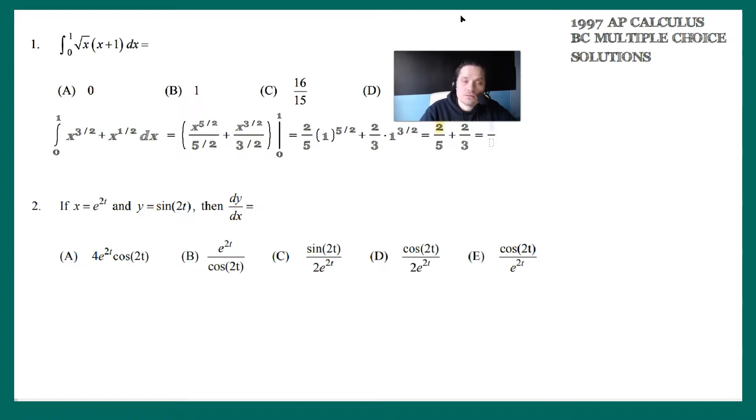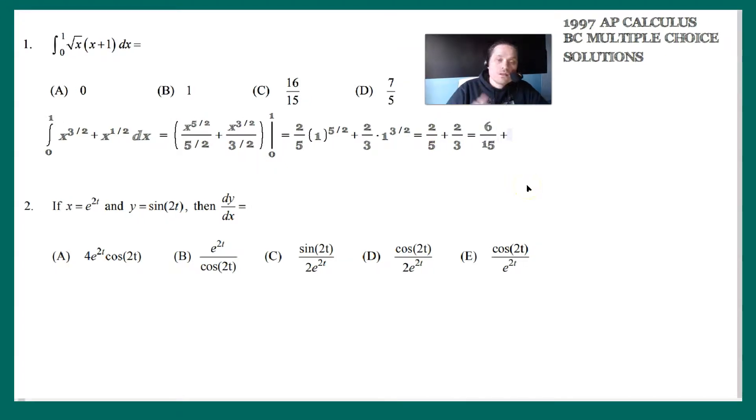Give this a common denominator. So you can multiply 2 fifths by 3, which will give you 6 fifteenths. And then you can add to it 2 thirds converted to fifteenths, so 5 times 2 is 10, 5 times 3 is 15, which means that this is 16 fifteenths. In other words, the answer is choice C right here.